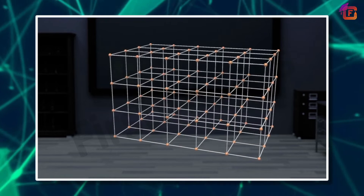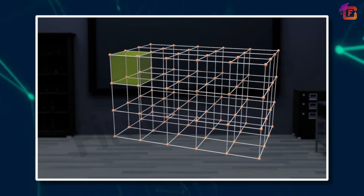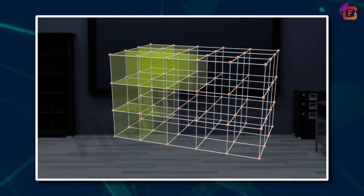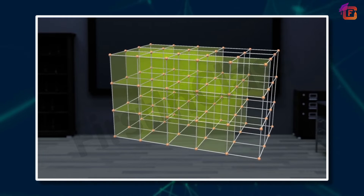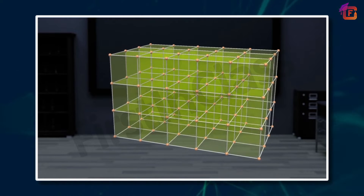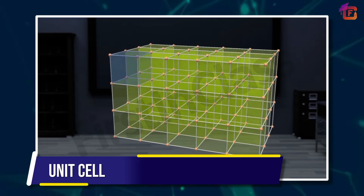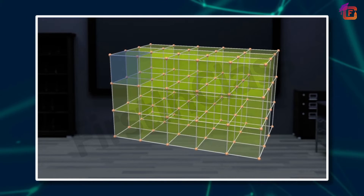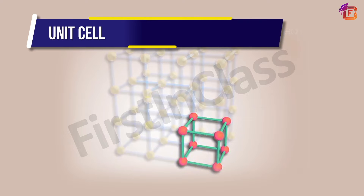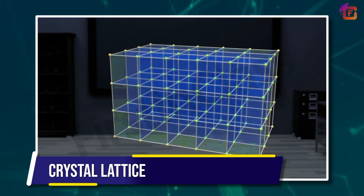If we observe the crystal lattice carefully, we will find that it is made up of many small portions. The smallest portion of a crystal lattice is known as a unit cell. We can define the unit cell as the smallest portion of a crystal lattice which, on repeating in different directions in space, reproduces the complete crystal lattice.